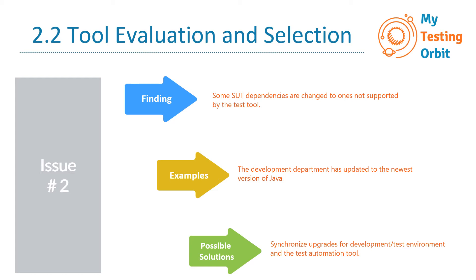When the development team is planning to upgrade to a newer version, they need to discuss it with the test team to confirm whether the test tool will support the new version. The test team may confirm it's fine to upgrade, or advise there is a constraint and the tool is not yet ready for the newer version — in which case, the development team can hold off on that upgrade.